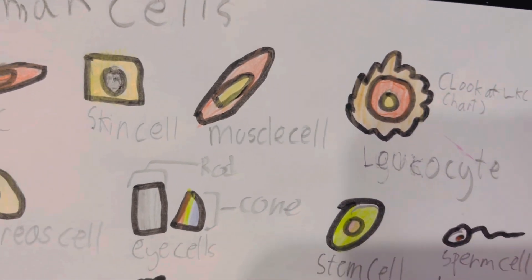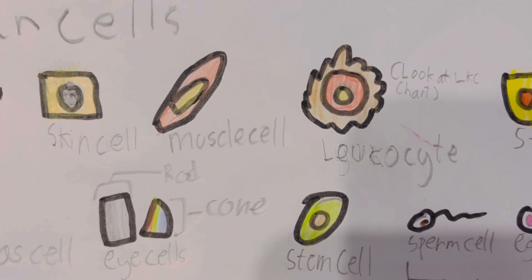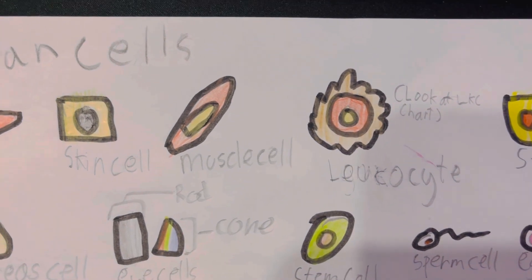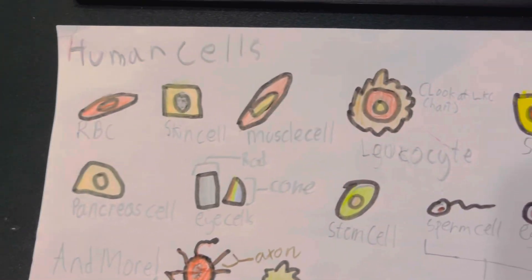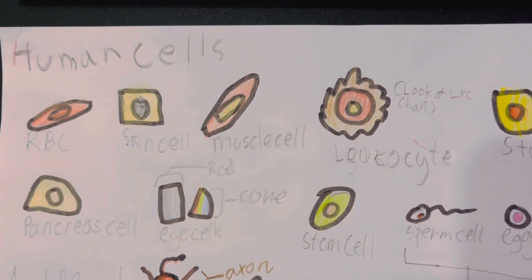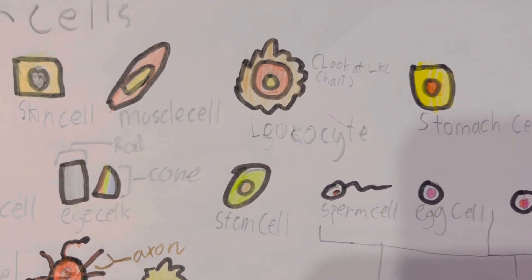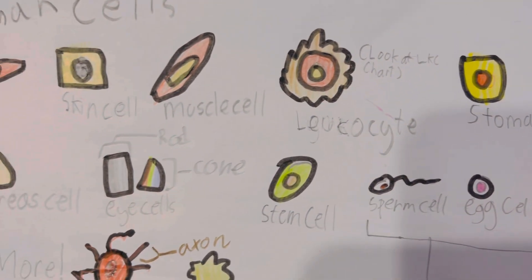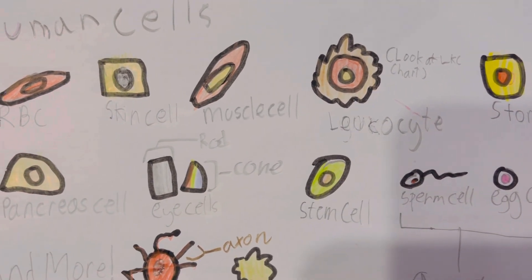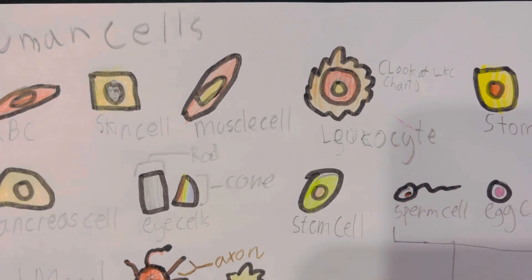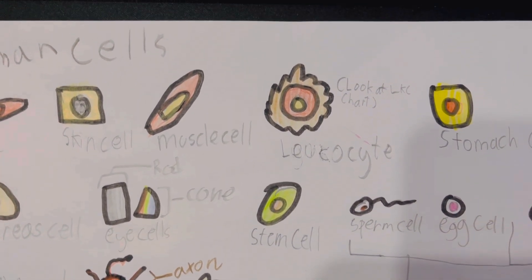Muscle cells have to contract. When you bend your arm to get a donut or something, you have to use your muscles, which are just a collection of muscle cells. They have to do different things just for you to move around or get your heart beating. If your heart doesn't beat, you are dead.